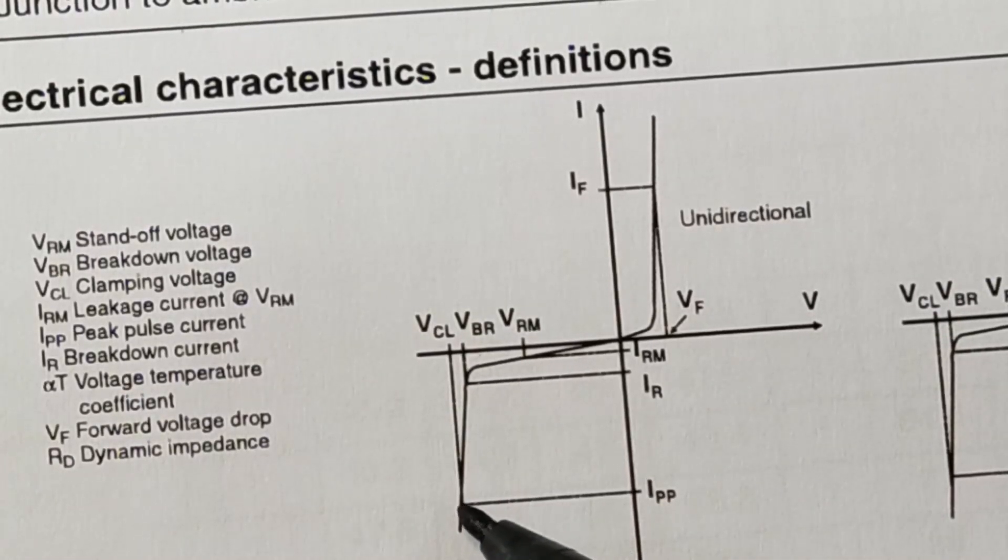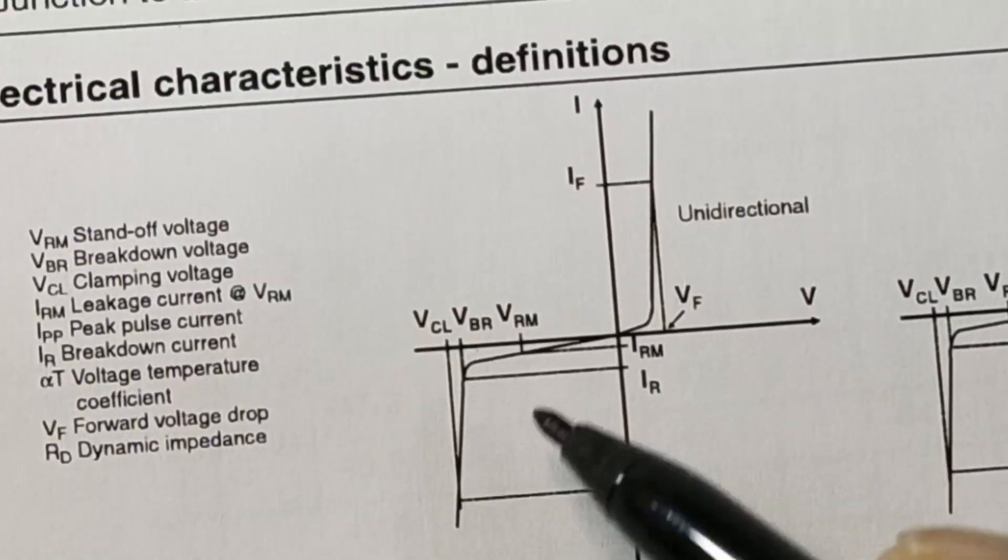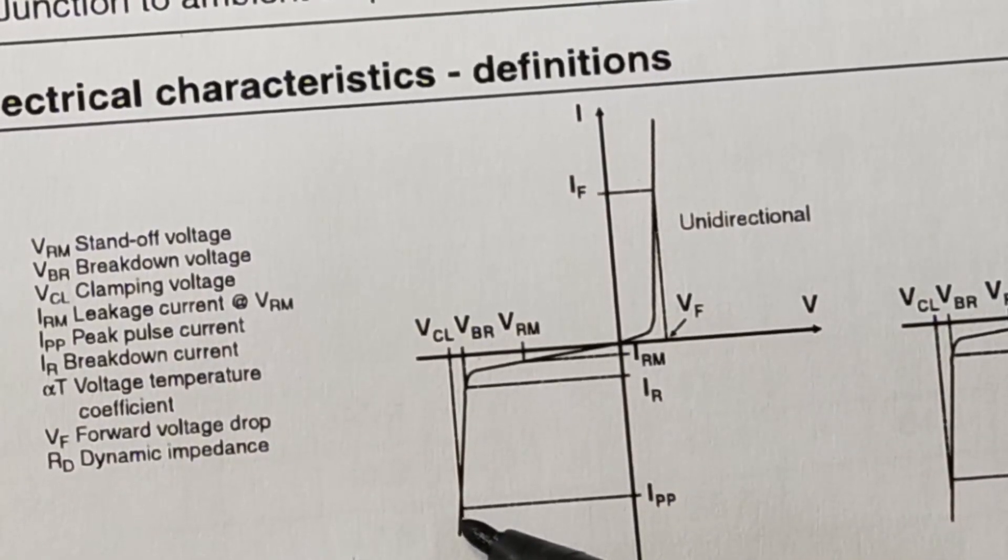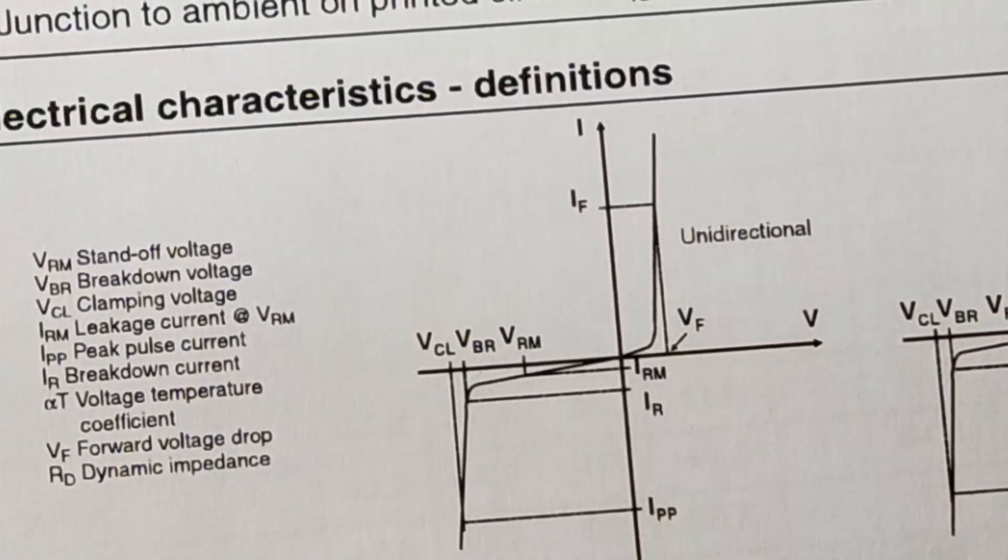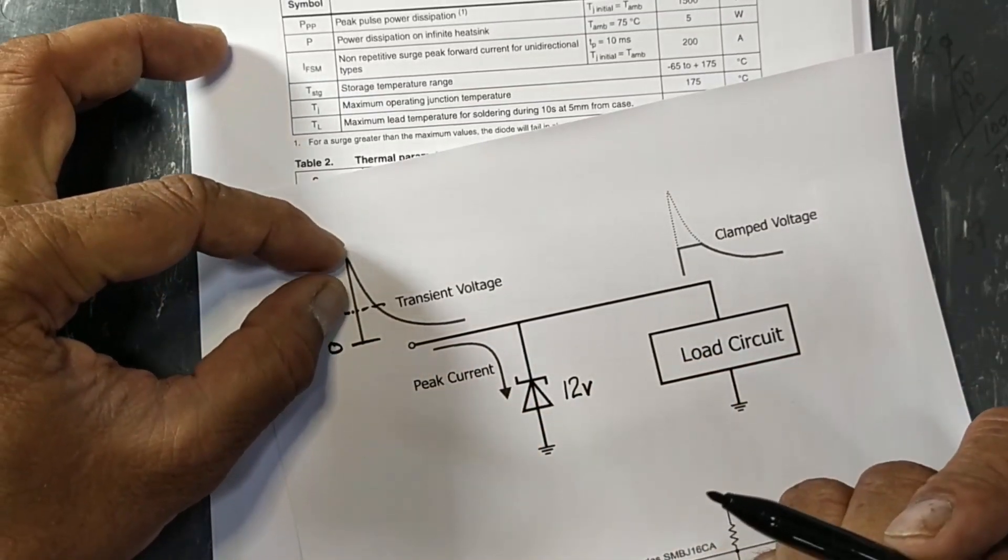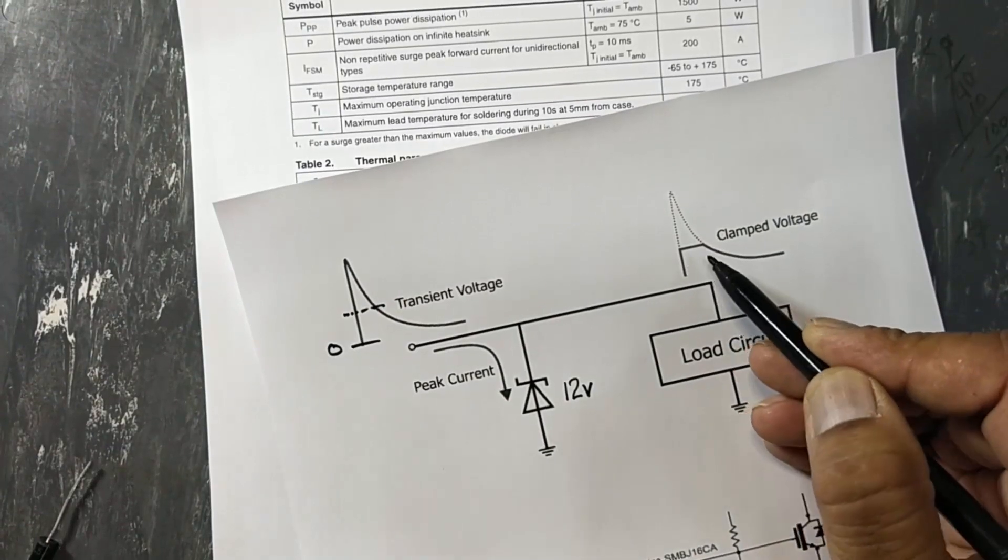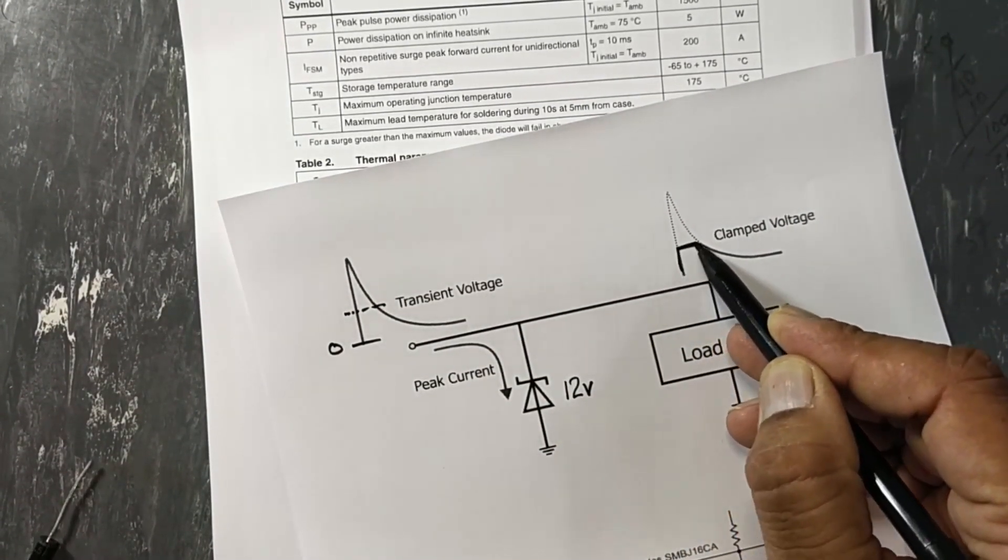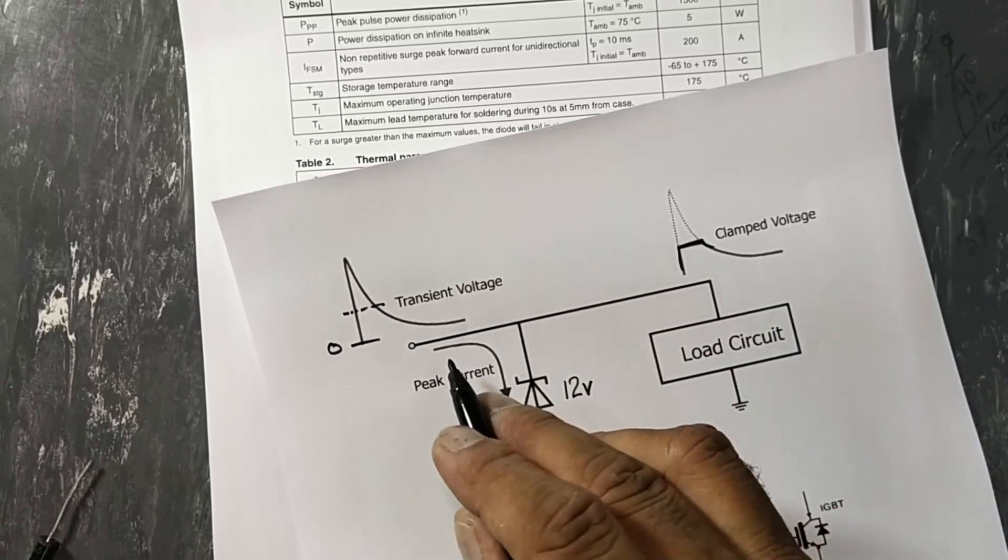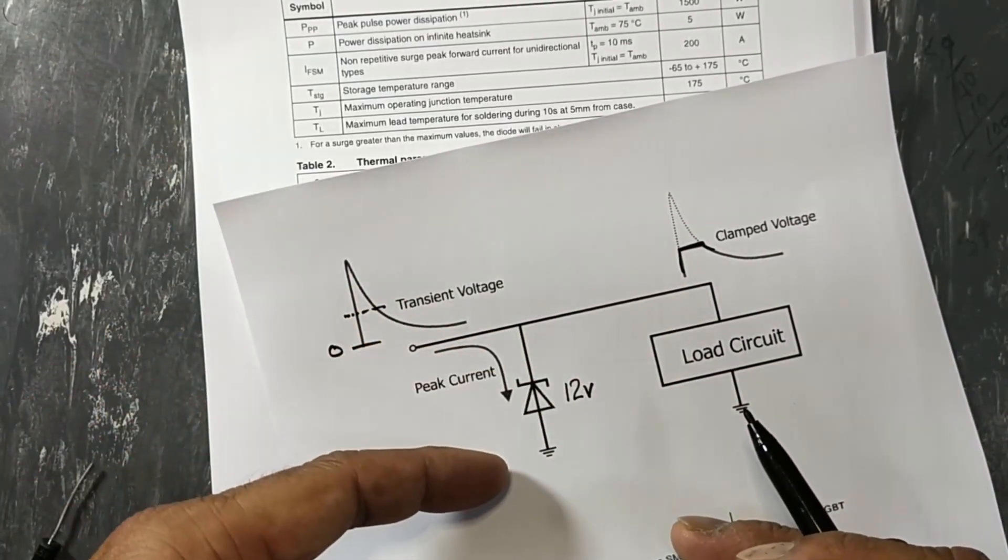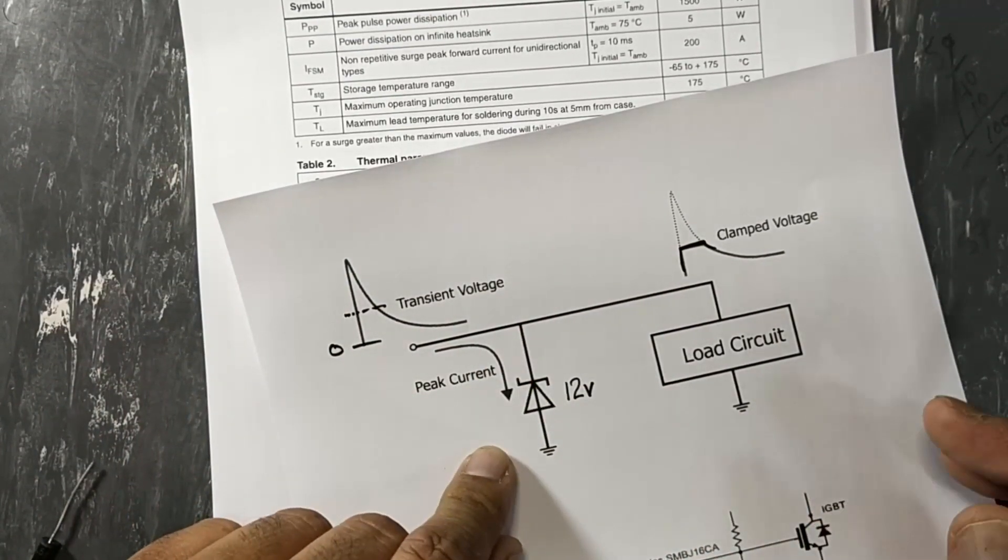And then it has a VCL - clamping voltage. In this region it will start, and above this limit it will clamp all the voltage, it will remove it. It will clamp off this peak and it will allow to pass this pulse to the circuit. And the voltage above this will be grounded through this TVS diode.